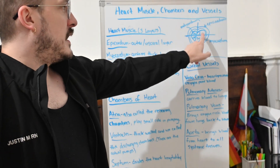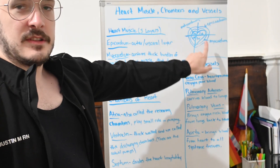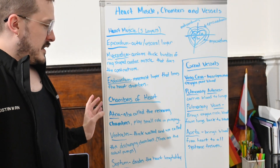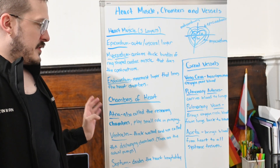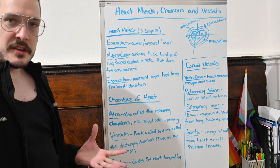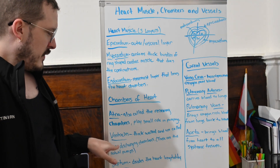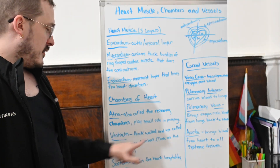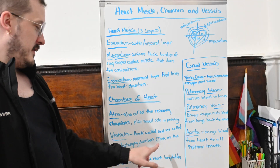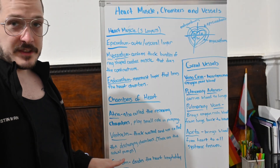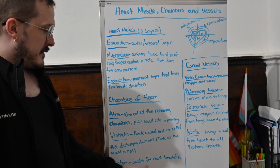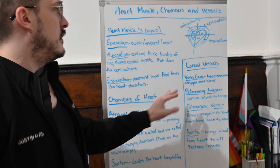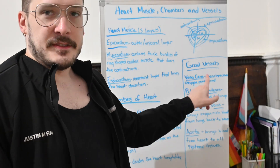The chambers of the heart — there are four: the right atrium, left atrium, right ventricle, and left ventricle. The atria, also called the receiving chambers, play a small role in pumping blood. The ventricles are thick-walled and called the discharging chambers — these are the actual pumps of the heart. The septum divides the heart longitudinally.